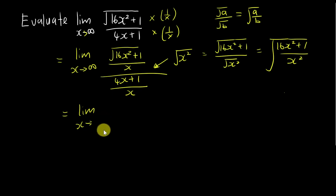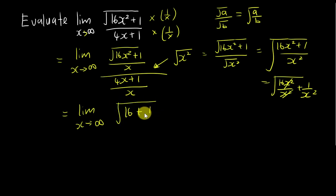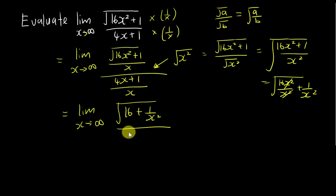When I join them together, I get: square root of (16x²/x² + 1/x²). The x² over x² cancels, giving square root of (16 + 1/x²). For the denominator, I separate 4x over x plus 1 over x, which gives 4 plus 1 over x.